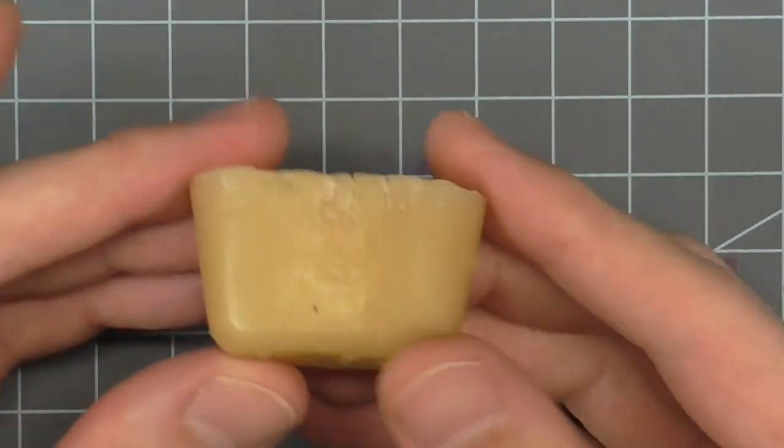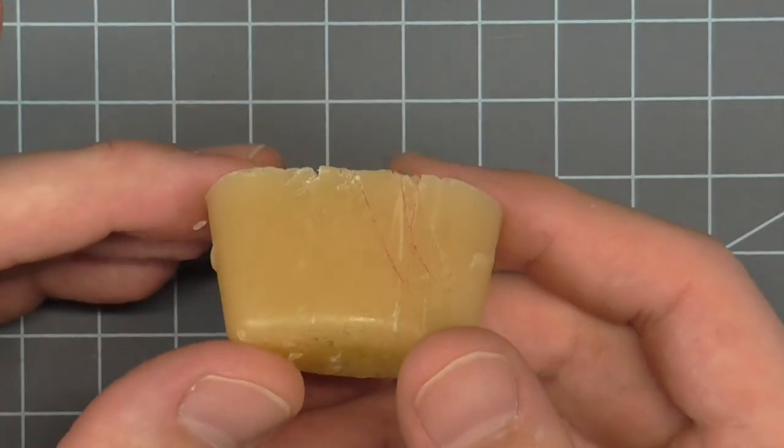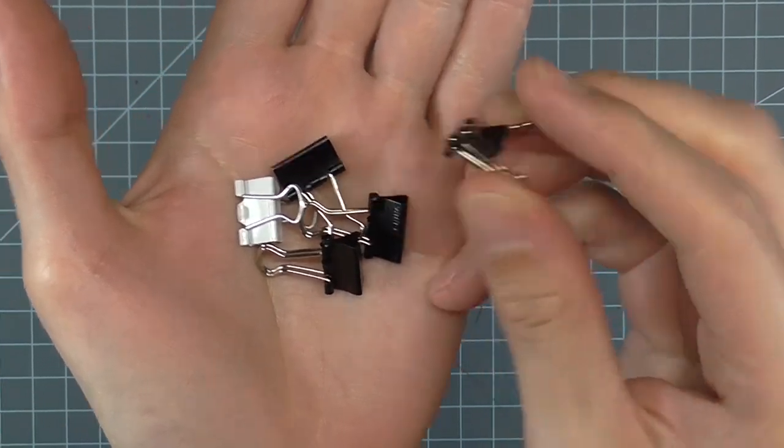Beeswax is helpful to make the thread slide through the buckram and fabric more easily. Small binder clips can be helpful to hold the wire against the buckram shape while stitching.